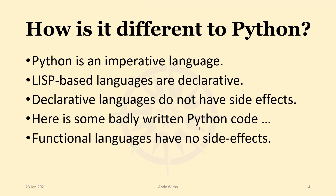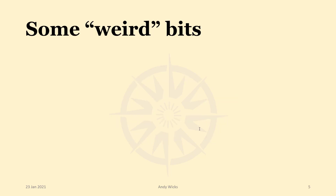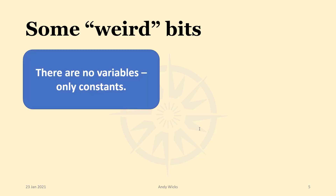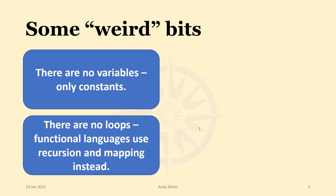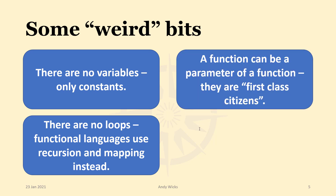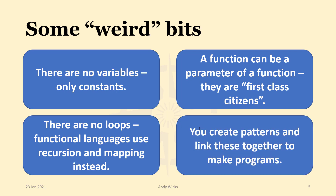Functional languages have no side effects, and this leads to a few interesting things. There are some aspects that, if you're used to an imperative language such as Python, take a little while to get your head around. First of all, there are no variables — there are only constants. Next, there are no loops; functional languages use recursion and mapping instead. A function can be a parameter of a function — they're first-class citizens, so we can pass a function as a value to a function. And finally, you create patterns and link these patterns together to make programs. It's not as bad as it seems, as you'll see in the next video.